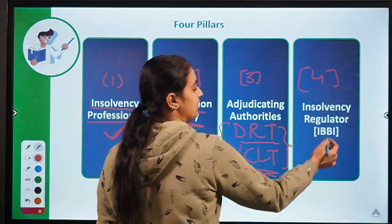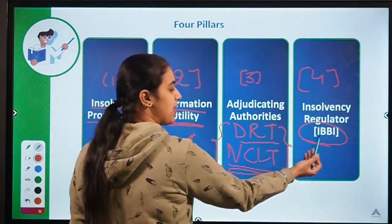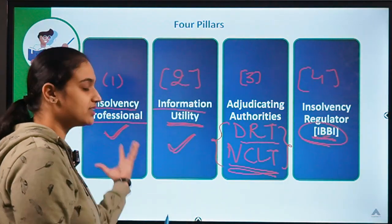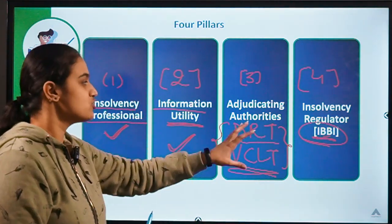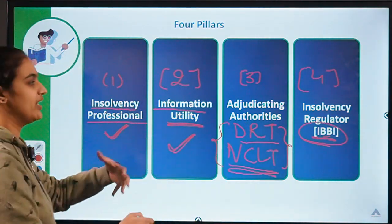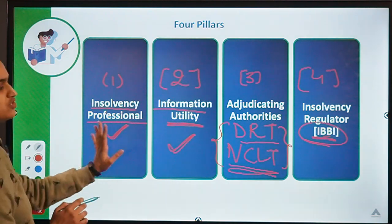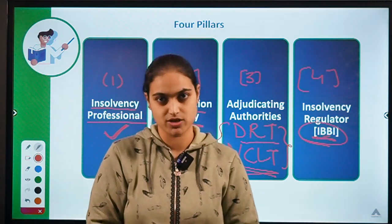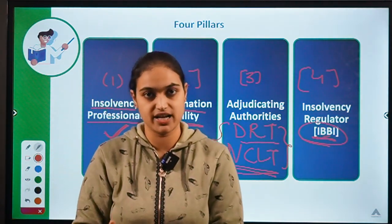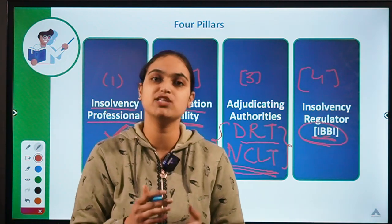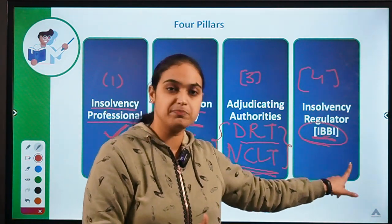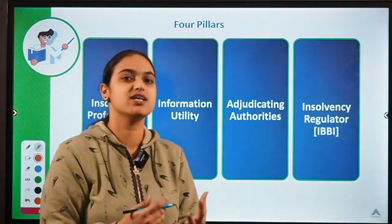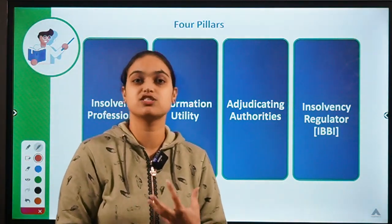The fourth pillar is the insolvency regulator — IBBI, that is the Insolvency and Bankruptcy Board of India. This is the body that regulates the Insolvency and Bankruptcy Code. It provides regulatory oversight over the professionals and information utilities, governing the whole process. You can also fetch necessary details about this code and its amendments from the IBBI website. These four pillars make the insolvency and resolution process stronger.